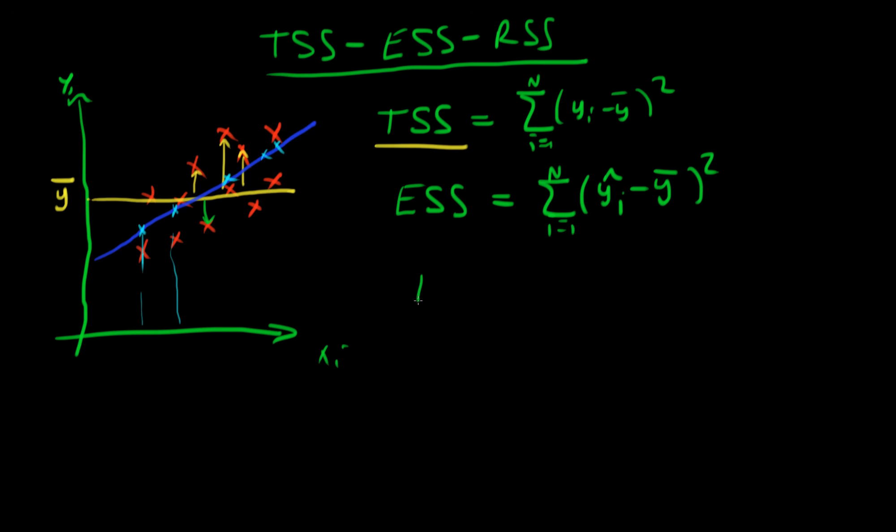In reality, it's not frequently the case that the explained sum of squares is the same as the total sum of squares. Because in order for this to be the case, I'd have to have a model which fitted through each of the points absolutely perfectly. And aside from the fact that that would probably overfit my data, it's very unlikely that we'd get that in reality.